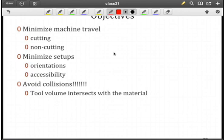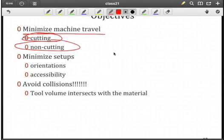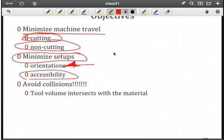One way to do that is to minimize the machine travel in terms of the tool, both for cutting and non-cutting. We'd like to minimize non-cutting as a fraction of the total cycle time, and minimize setups. By that, we mean different orientations of the workpiece with respect to the machine, and at the same time, provide enough accessibility to get to all of the features.